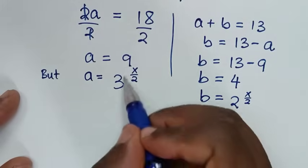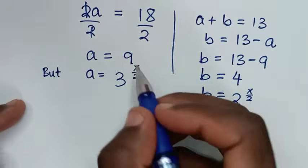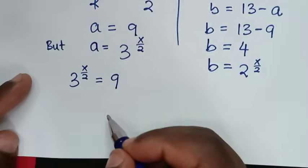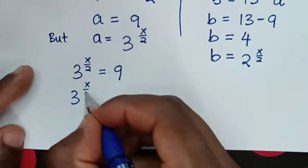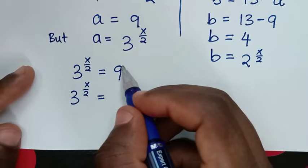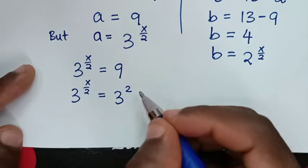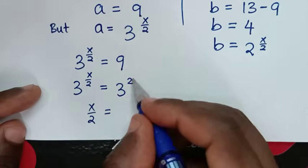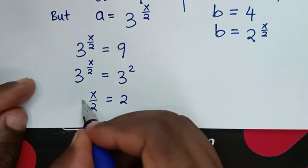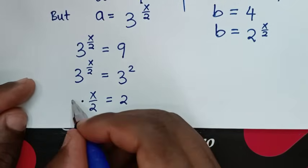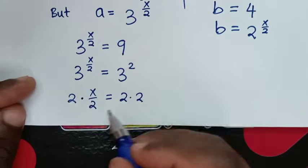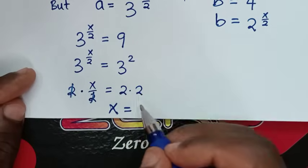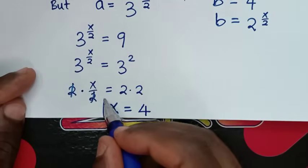We recall that a equals 3 power of x over 2. Comparing, 3 power of x over 2 equals 9, which is 3 squared. So x over 2 equals 2. Multiplying both sides by 2, x equals 4.